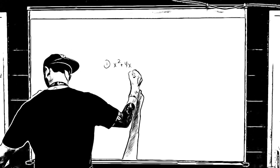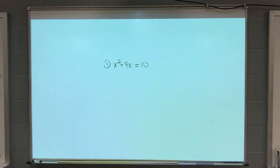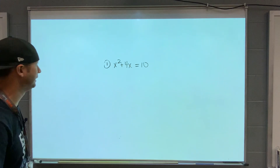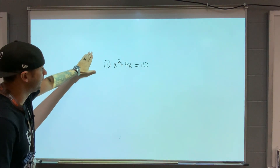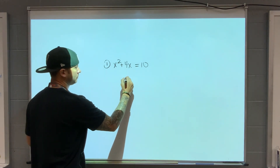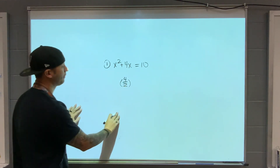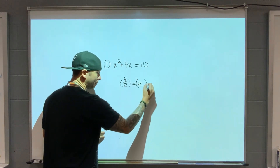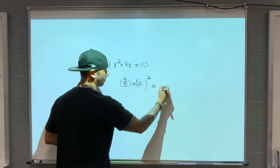We are starting completing the square worksheet. Completing the square — it's a very specific technique. I want to take half of the b value, so half of 4. Half of 4 is 2. We have to square it. 2 squared is 4.